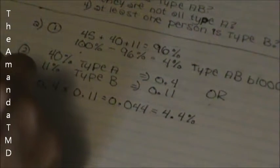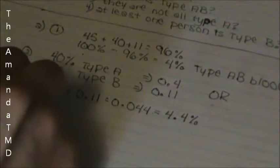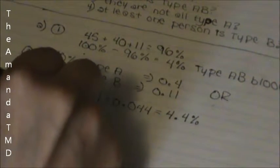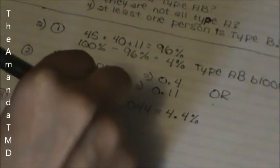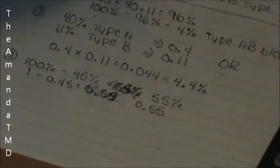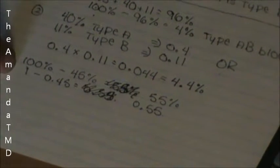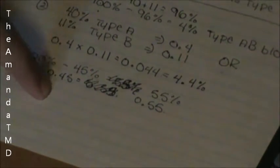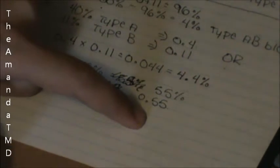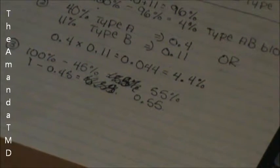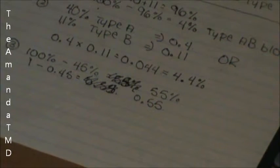It will just be 100% minus 45%, which would give you 55%. Or, if you want to do it in decimals, it would be 1 minus 0.45, gives you 0.55. And that means that 55% of your donors are not going to be a type O.